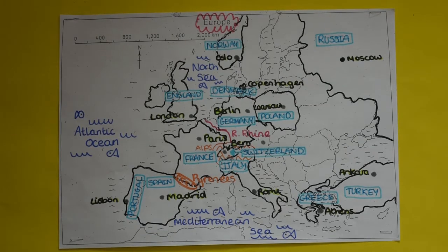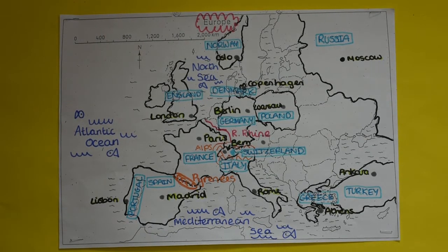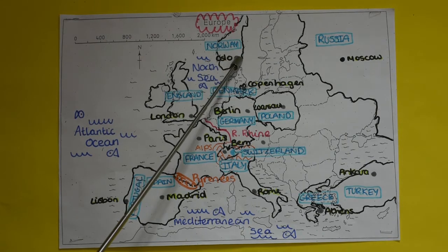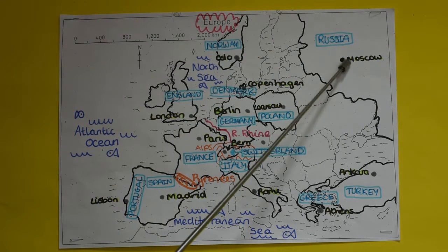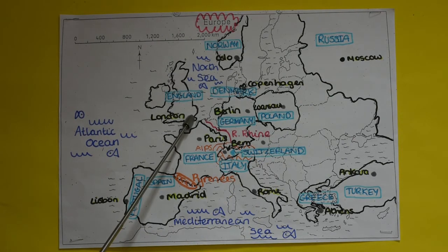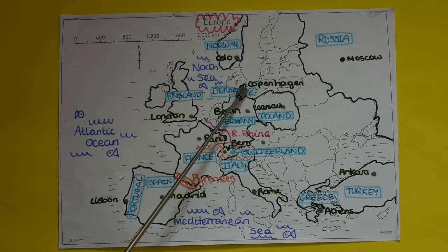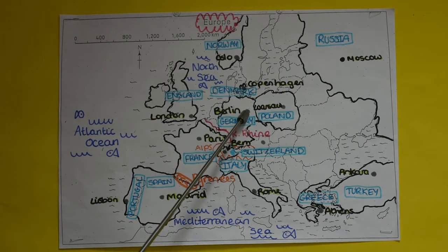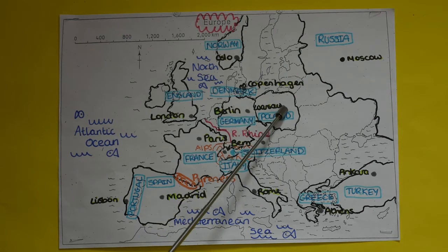You also need to know the following capitals. The capital of Norway is Oslo. The capital of Russia is Moscow. The capital of England is London. The capital of Denmark is Copenhagen. The capital of Germany is Berlin. The capital of Poland is Warsaw.